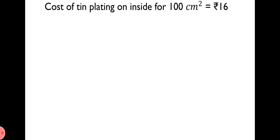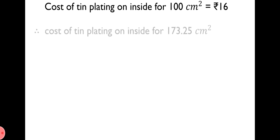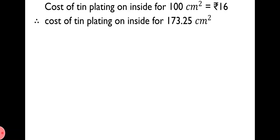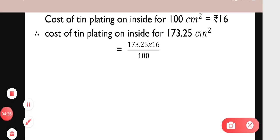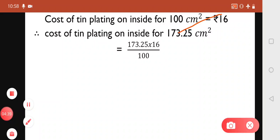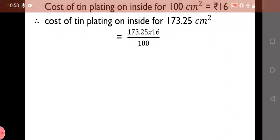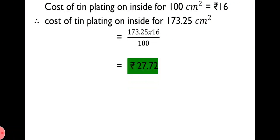Now we have to find the cost. It is given that cost of tin plating on the inside for 100 cm² = ₹16. Therefore, cost of tin plating for 173.25 cm² — here we do cross multiplication — we get equal to 173.25 × 16 / 100. On solving, we get ₹27.72. So, the cost of tin plating the inner side of the hemispherical bowl is ₹27.72.